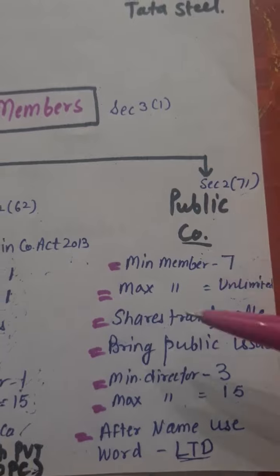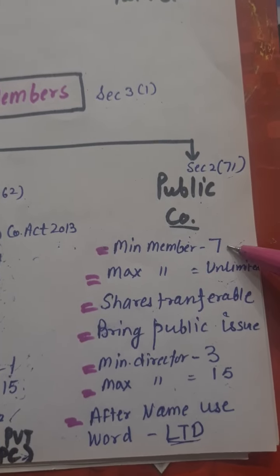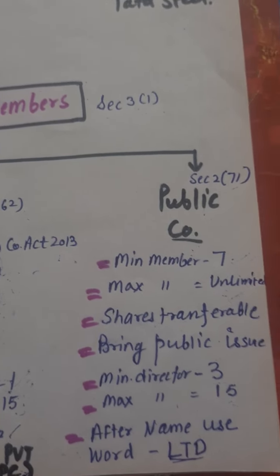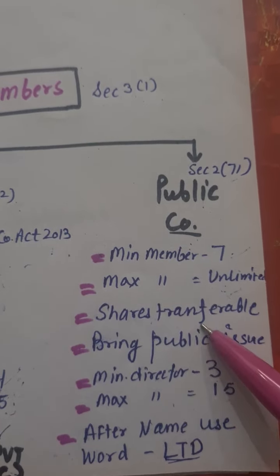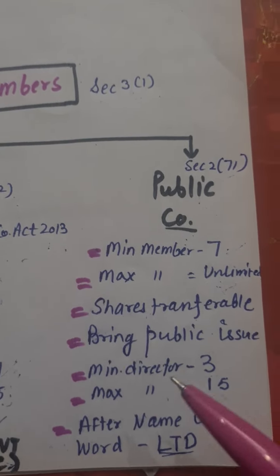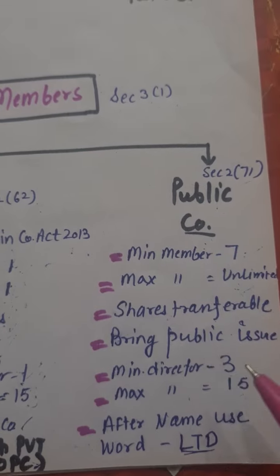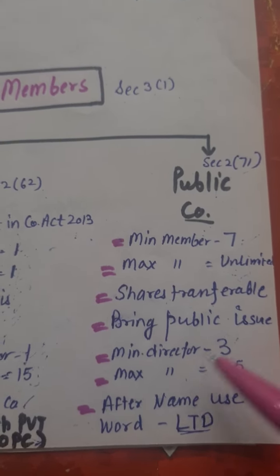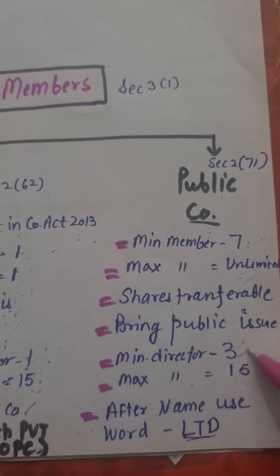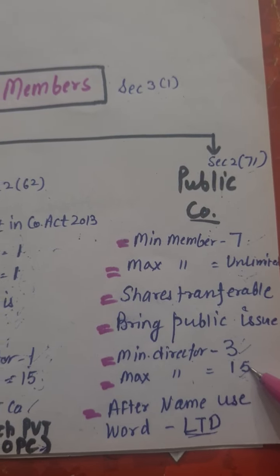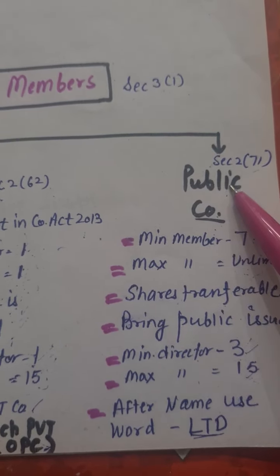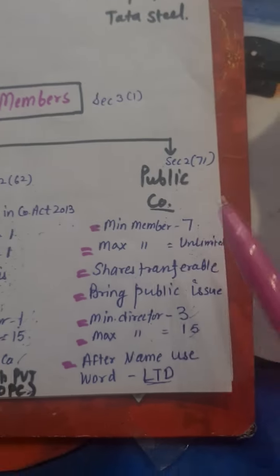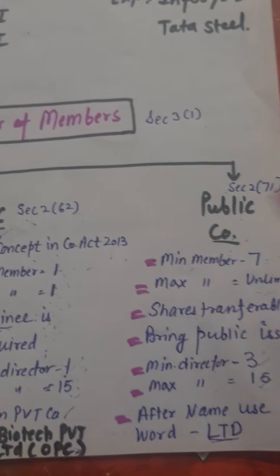Next is the public company. In a public company, the minimum number of members is 7 and maximum members are unlimited. Shares are transferable and public issues are allowed. Minimum directors are 3 and maximum are 15. After its name, only 'Limited' or 'Ltd' is required — for example, Infosys Limited.